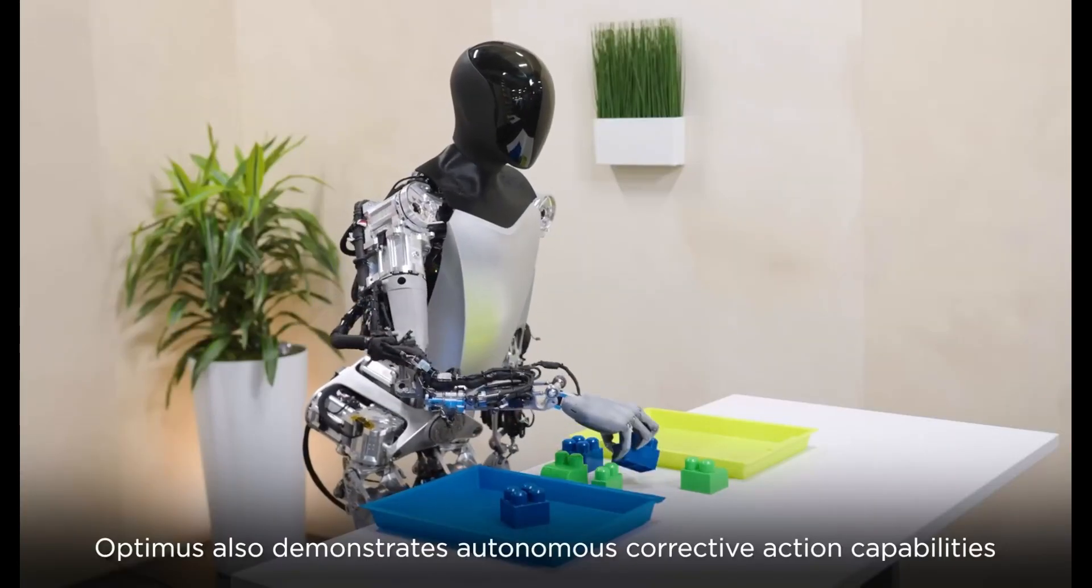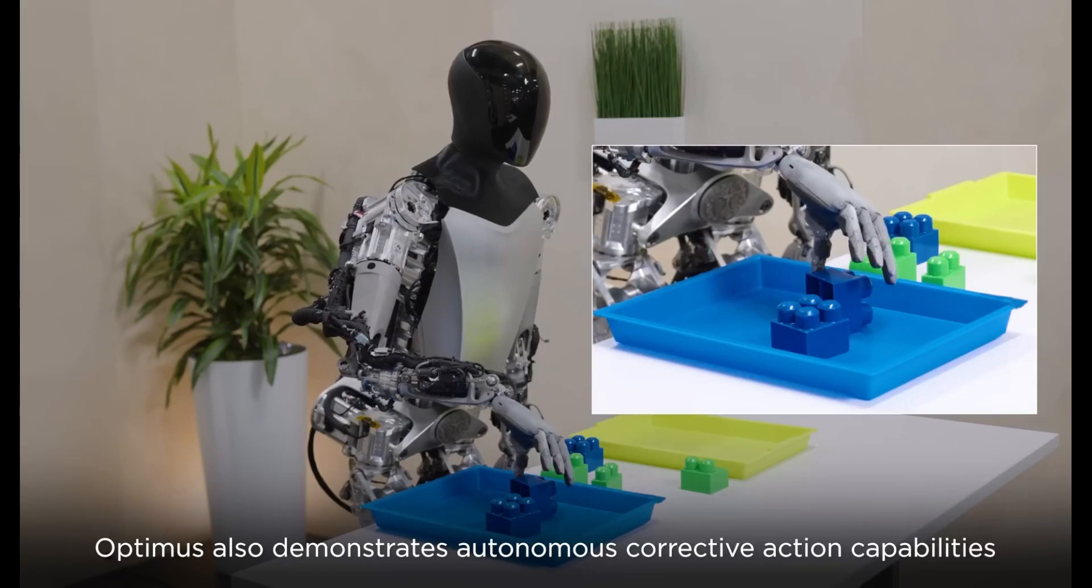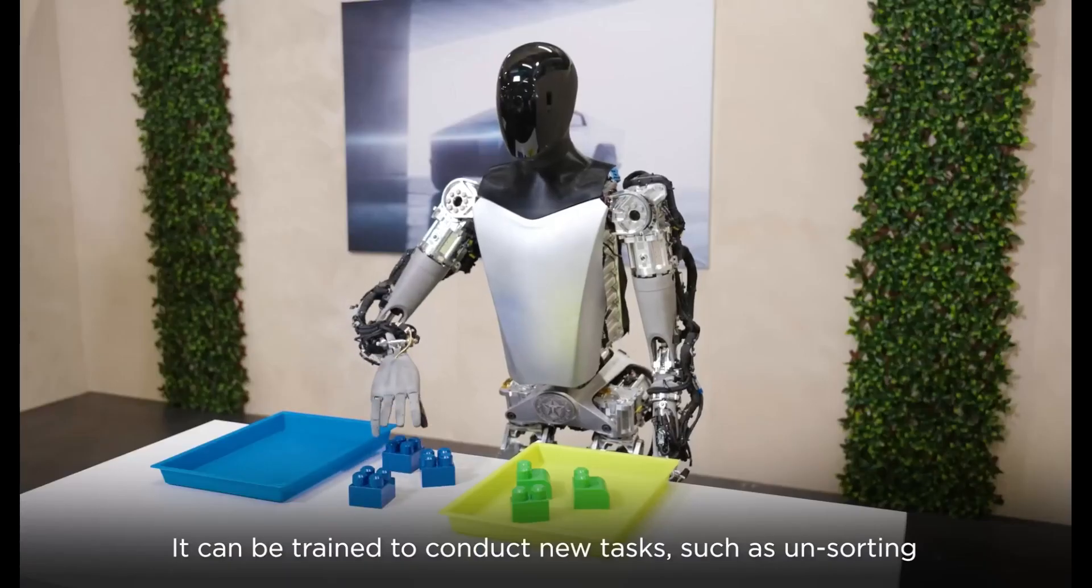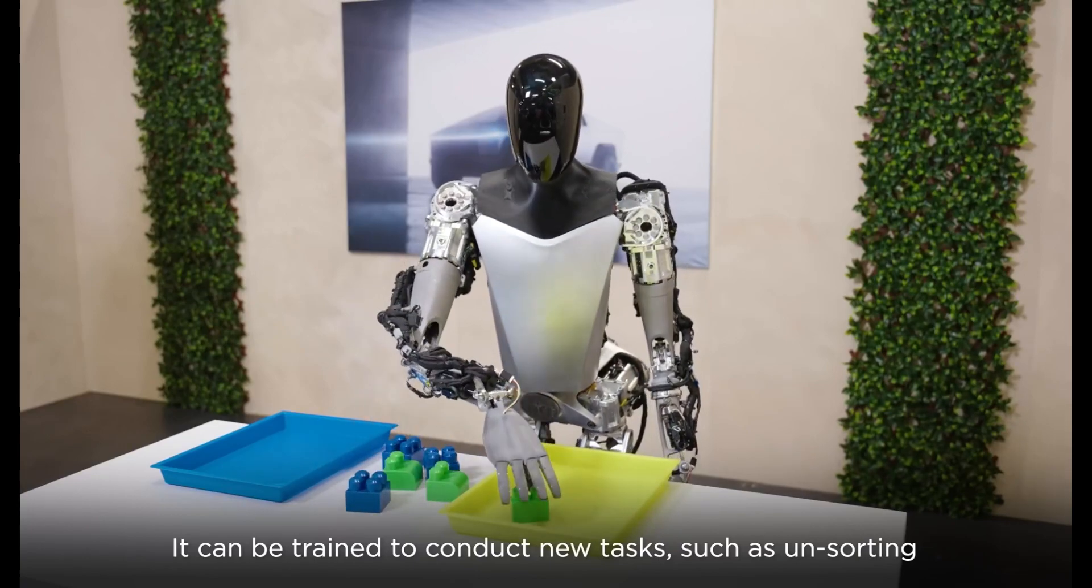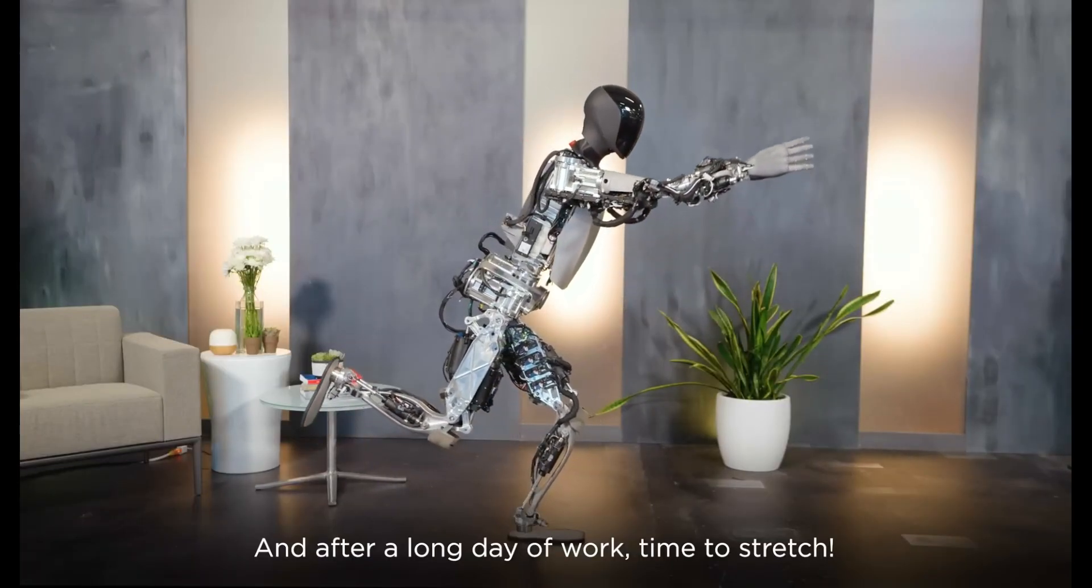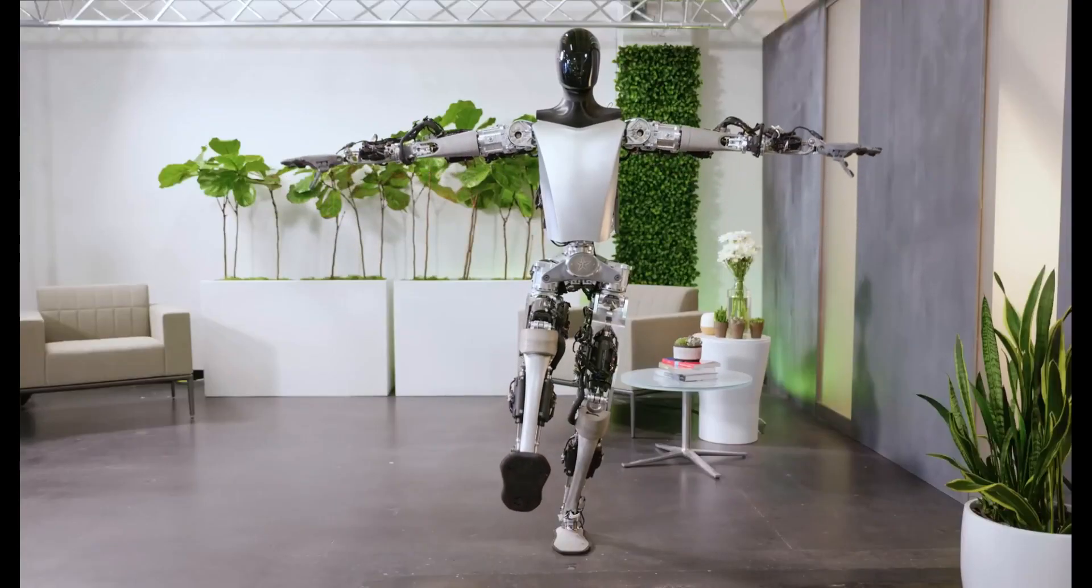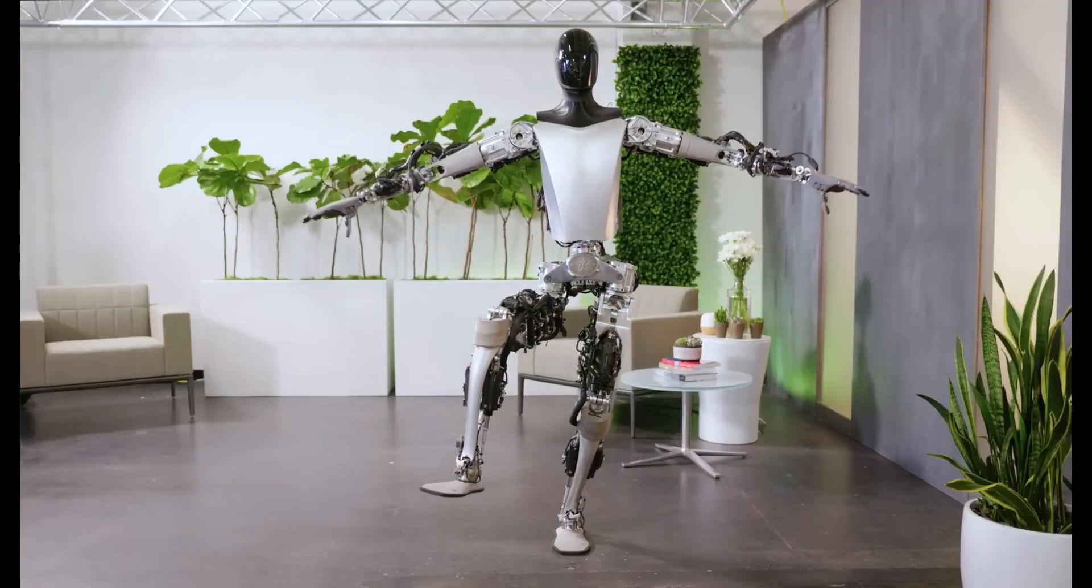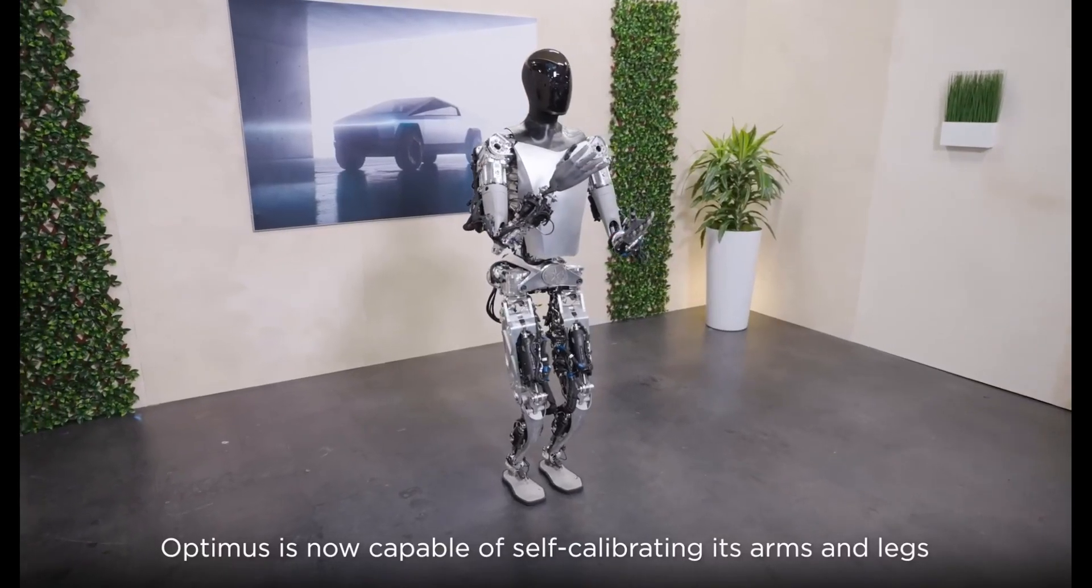At the time, technical specifications revealed that the humanoid robot would stand at a height of 5 feet and 8 inches, weighing 125 pounds, and achieve top speed of 5 miles per hour, ensuring that you can run away from it and most likely overpower it, according to Musk, as he humorously stated during that time.